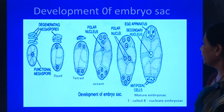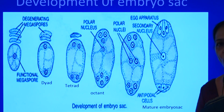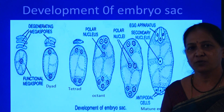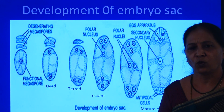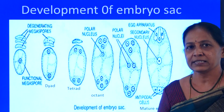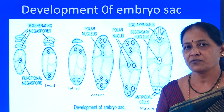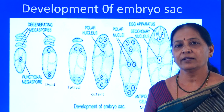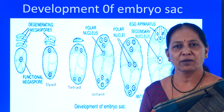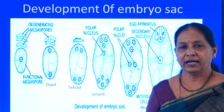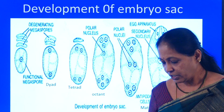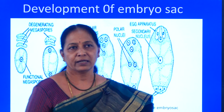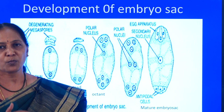This is the development of the embryo. When we observe the ovule, there is a central mass of cells called the nucellus. Any one of the cells in the nucellus becomes conspicuous and enlarged. That constitutes the megaspore mother cell.